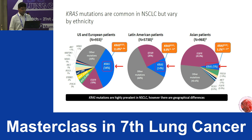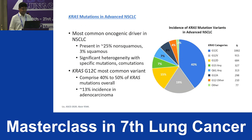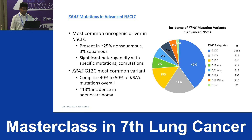KRAS mutation prevalence varies depending on ethnicity — ranging from 34 percent in Caucasian patients to around 5 percent in East Asian patients. KRAS mutation is much more common in non-squamous NSCLC compared to squamous, and among KRAS mutations, G12C is the most common, around 40 to 50 percent of all KRAS mutations.